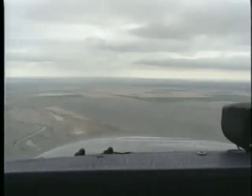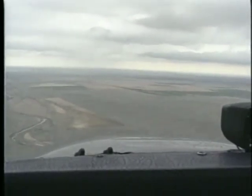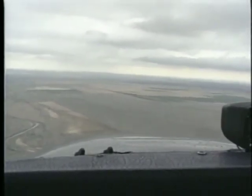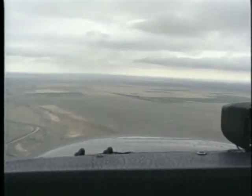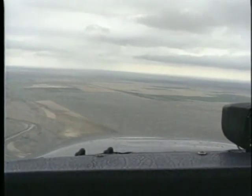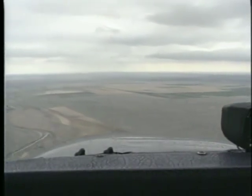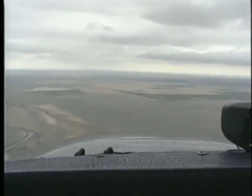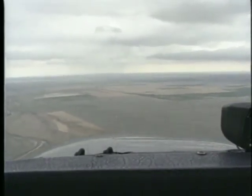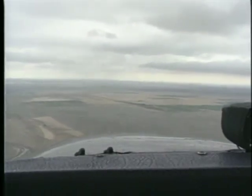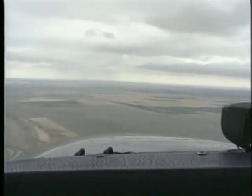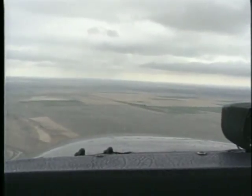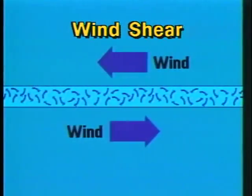The turbulence associated with thunderstorms varies in intensity from light annoying bumps to severe jolts that can damage your airplane and injure its occupants. To minimize its effect slow to maneuvering speed or less.